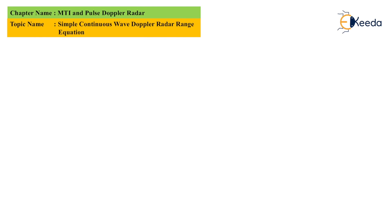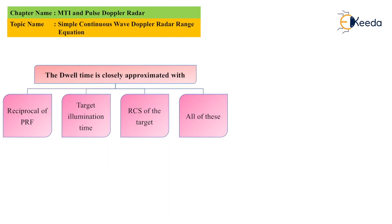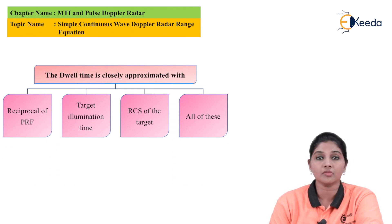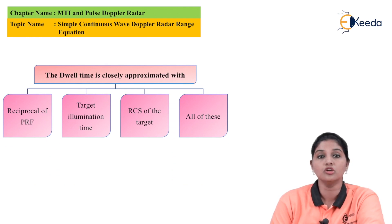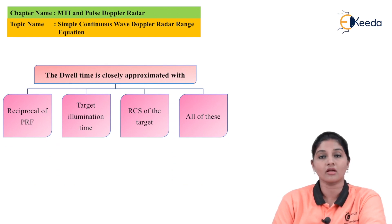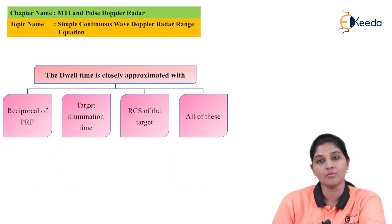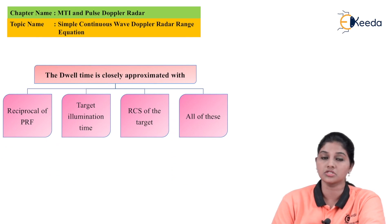The second question: dwell time is closely approximated with — options are: reciprocal of PRF, target elimination time, RCS of the target, or all of these. The answer is target elimination time, since dwell time is the time taken by the signal to travel in the forward direction from transmitter to target, and back in the reverse direction from target to receiver.